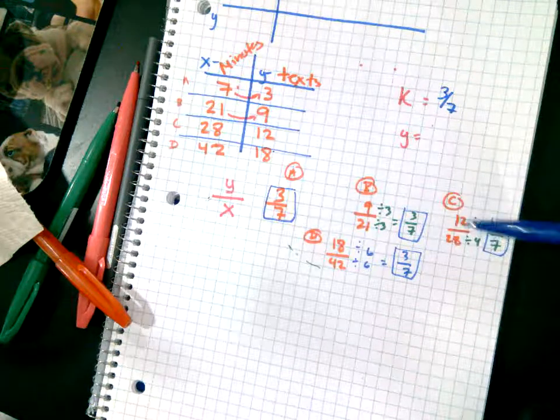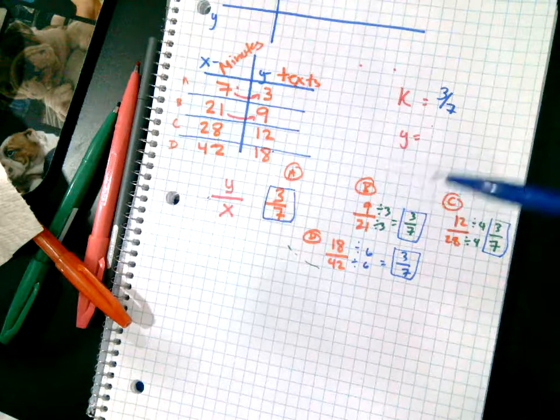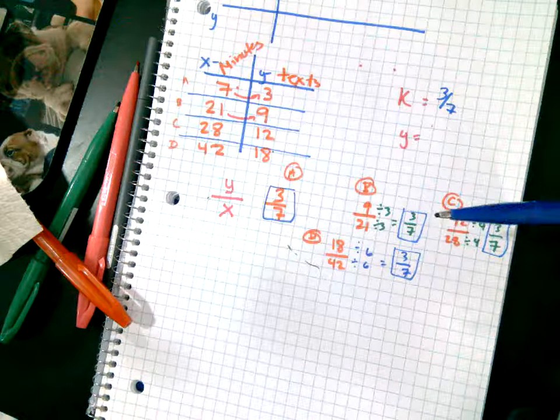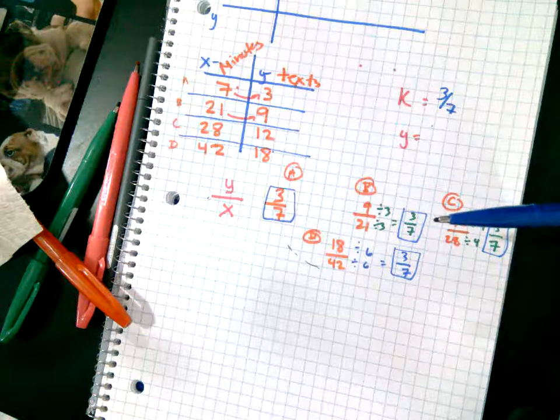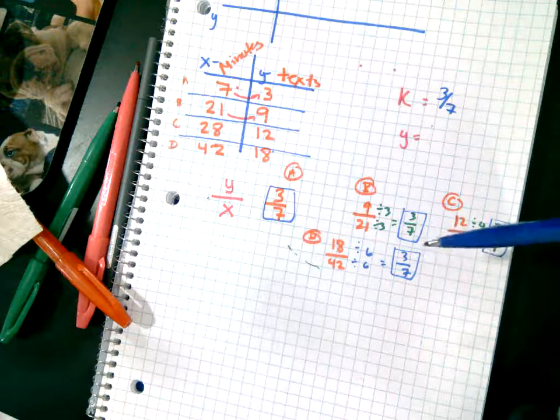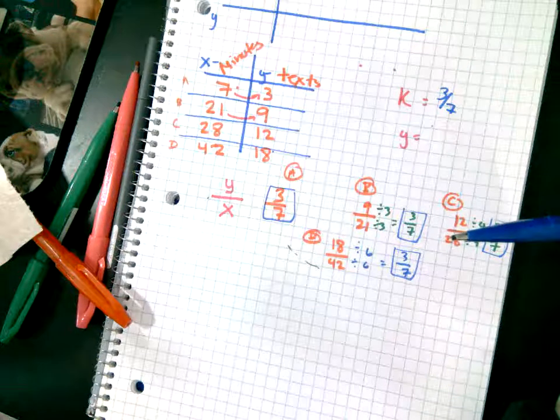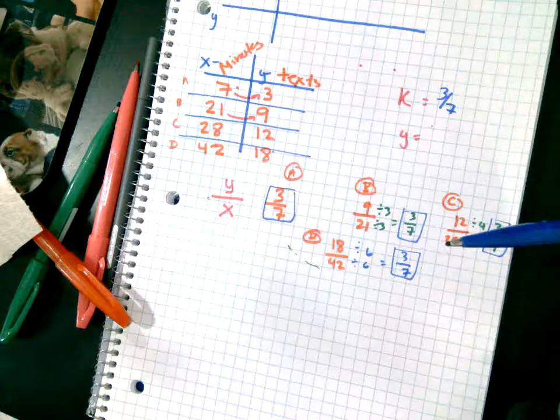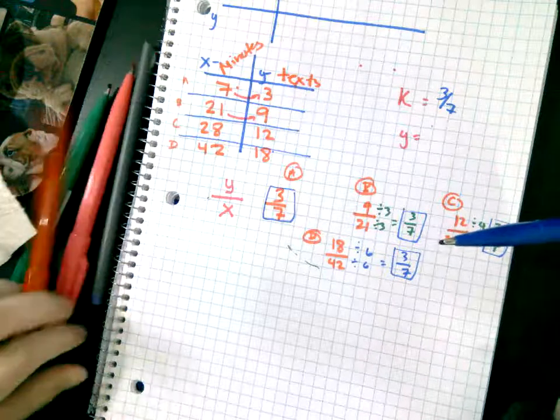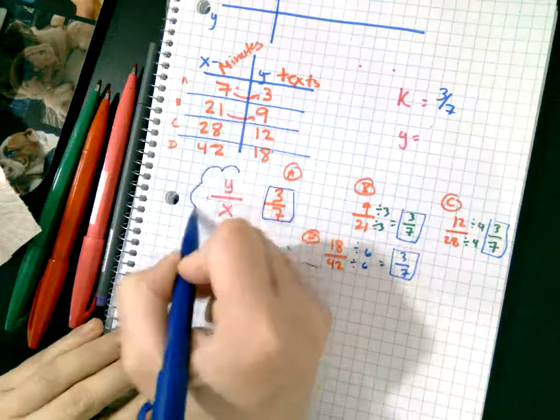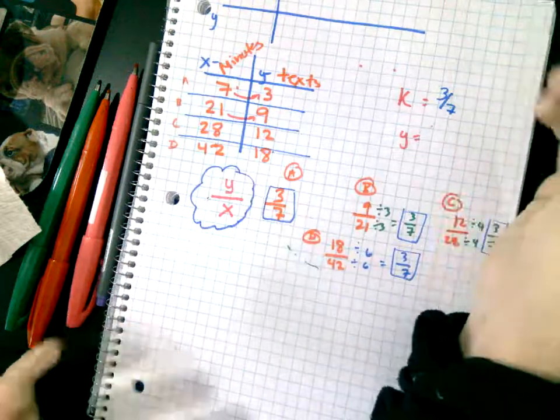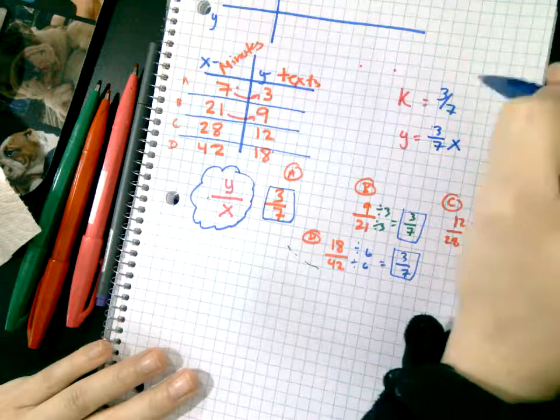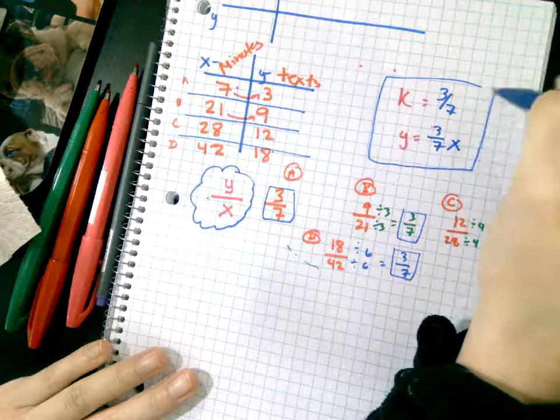If they all end up matching, which they will because I told you it's proportional, next week they won't match. If they all match, then it's called a proportional relationship. Then you can solve for a unit rate. If it's not clear, like I'm multiplying by 2 or 3, if it's not easy or the numbers are ginormous, then you write it as y over x, and that is your unit rate. Your equation would be y equals 3 over 7x.